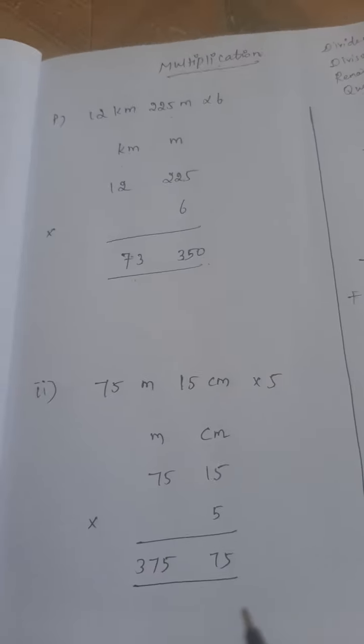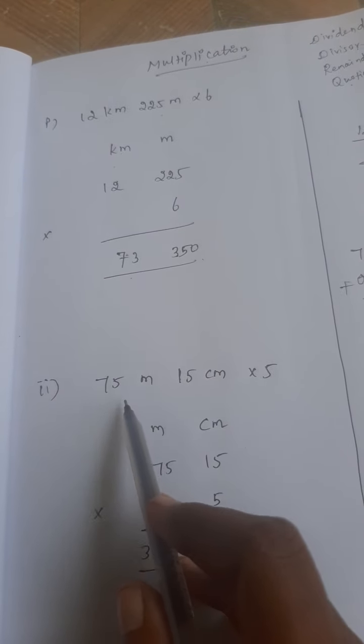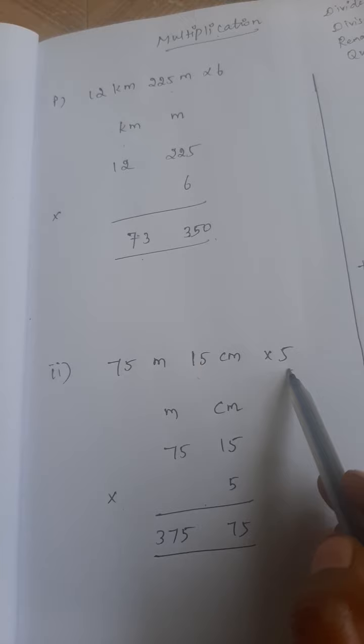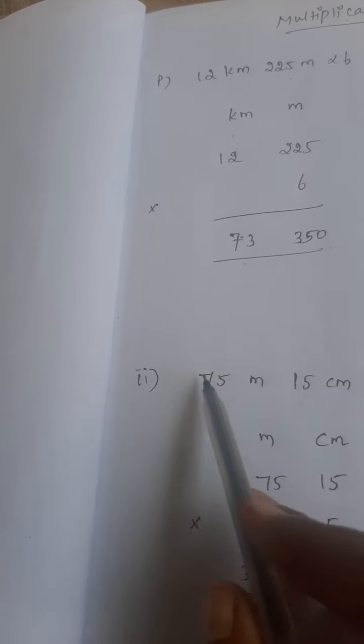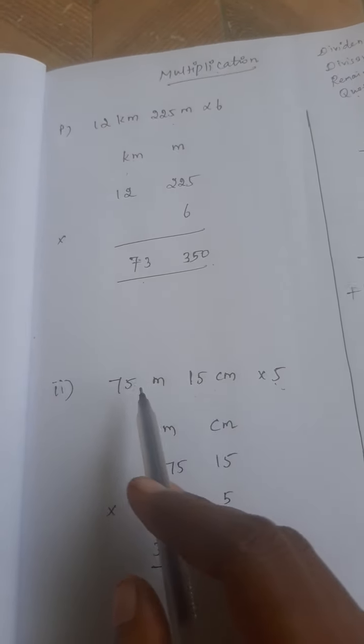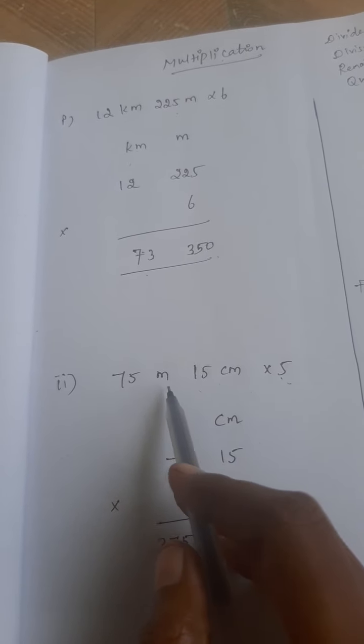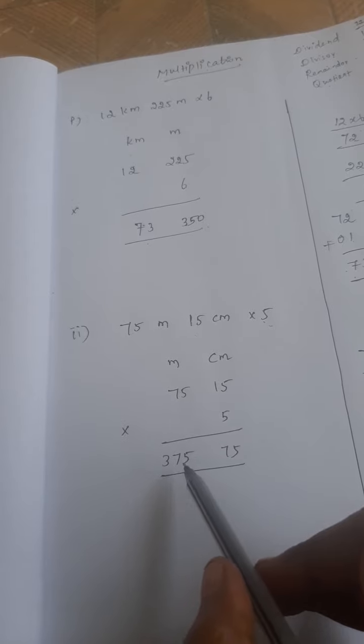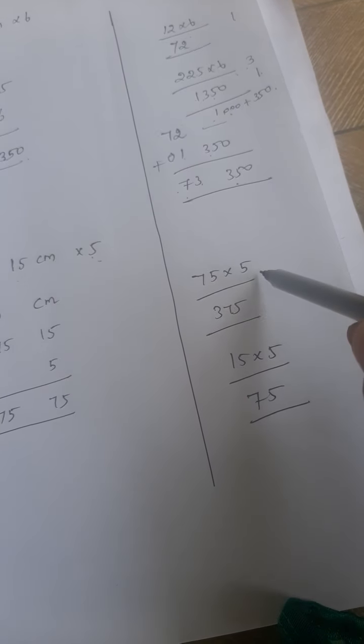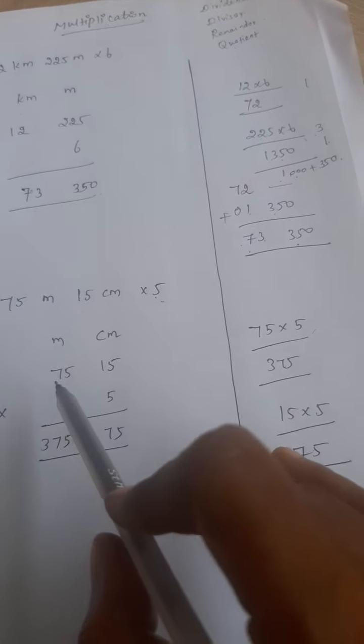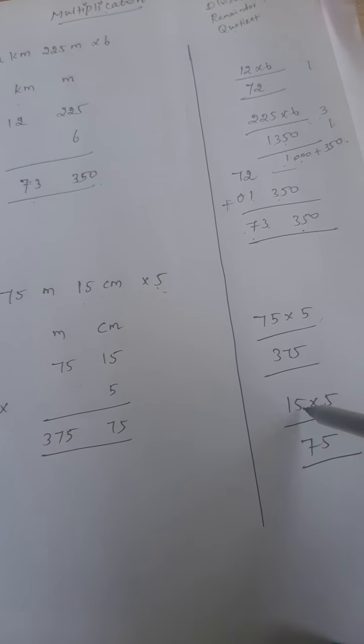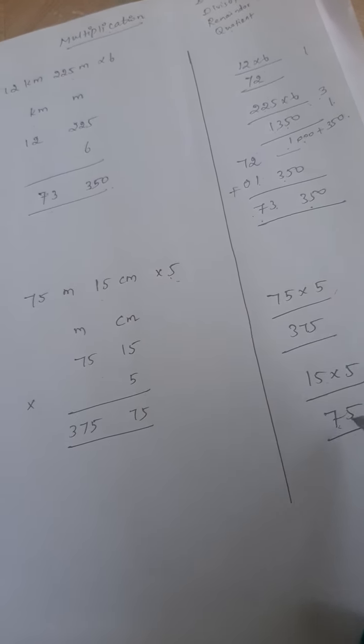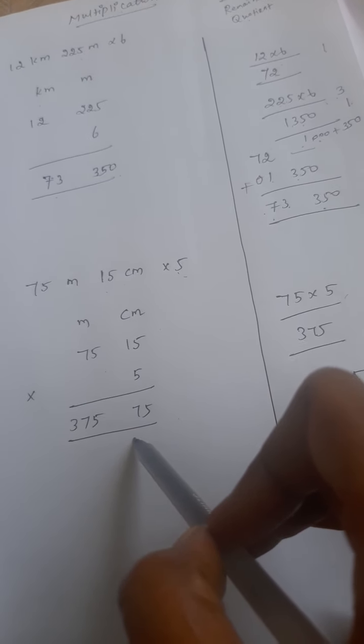The same manner. Here I wrote 75 meter 15 centimeter and 5. We can multiply that value with 5. So what is the place value here? Meter and centimeter. You can write the place value and multiply. Here I draw the rough column as the same manner. I can write the meter value, then after centimeter value. So here no 1000 values, so we cannot add the value. So directly we write the values.